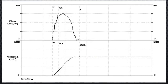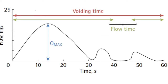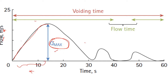This is the basic curve in uroflowmetry, where two graphs are given: one is the flow and the other is the volume. This is the flow curve and this is the volume curve, with time in seconds on the x-axis. On the y-axis we have flow in ml per second. The most important parameter is Q-max — that is the maximal flow rate — which is the peak of the graph. This is the time to reach maximal flow.